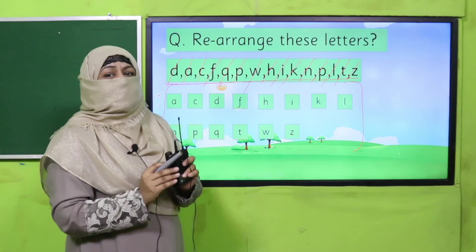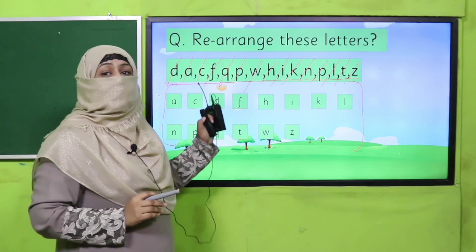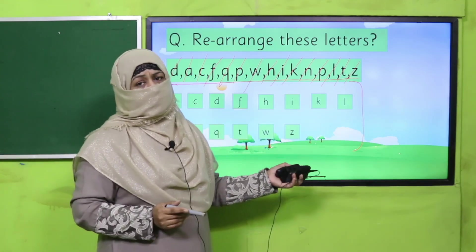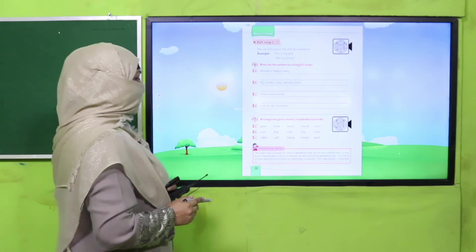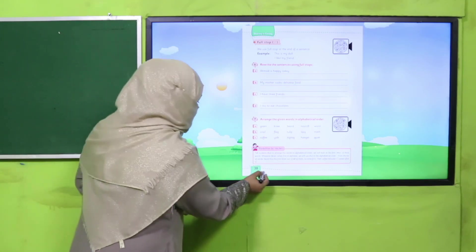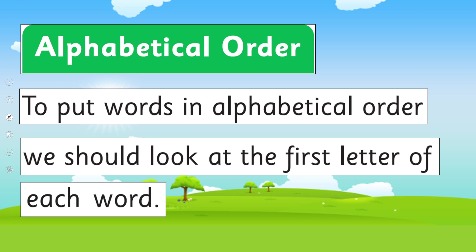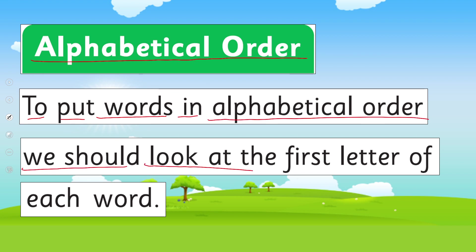Now this practice was for letters. The same practice we can do for words. Let's learn it. All of you open your book to page number 38 — Alphabetical Order. To put words in alphabetical order, we should look at the first letter of each word.